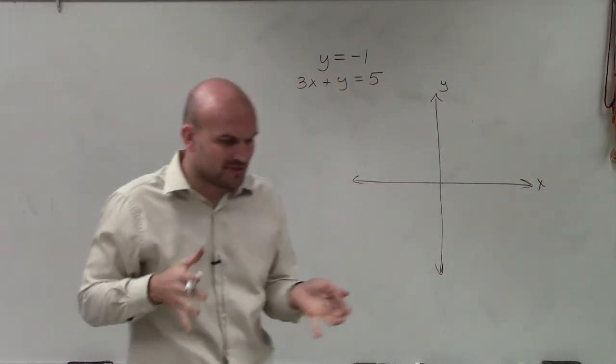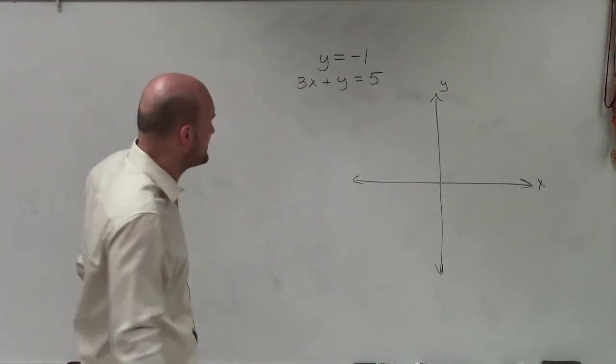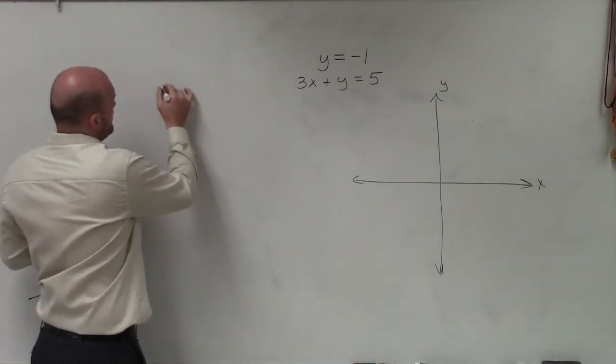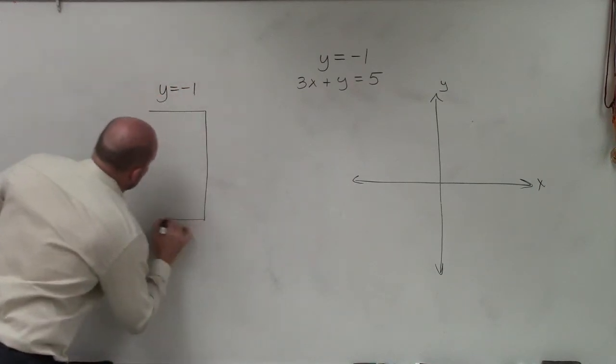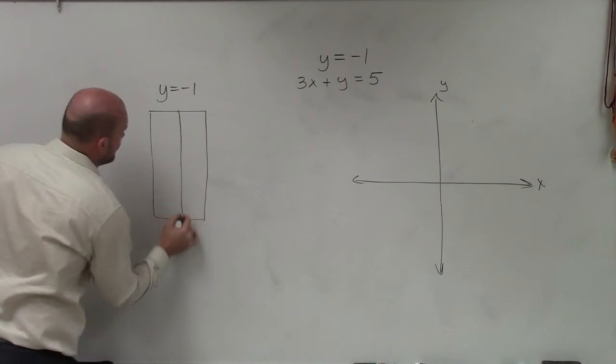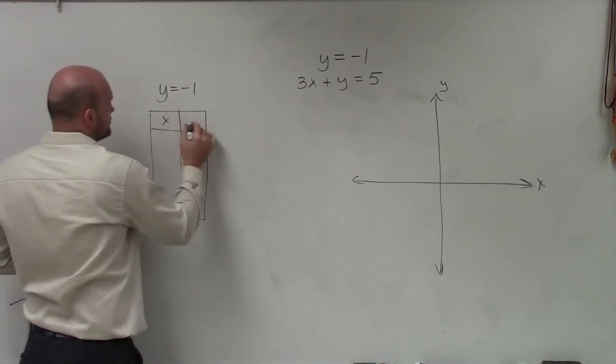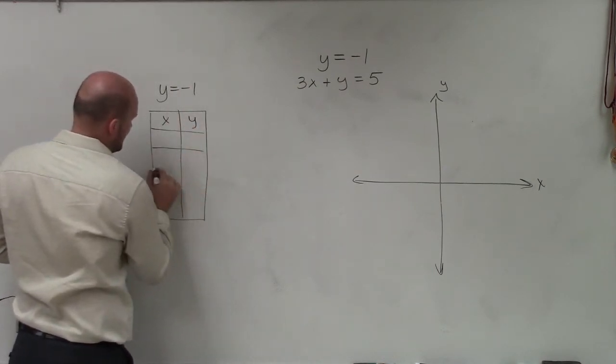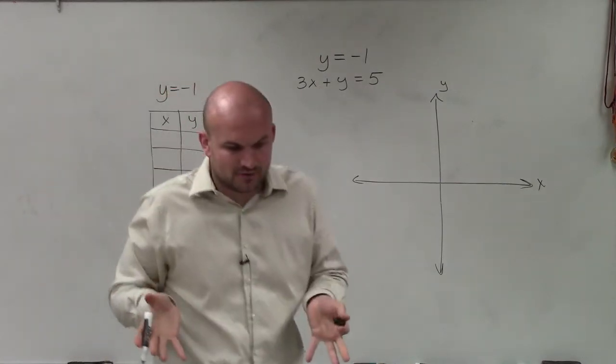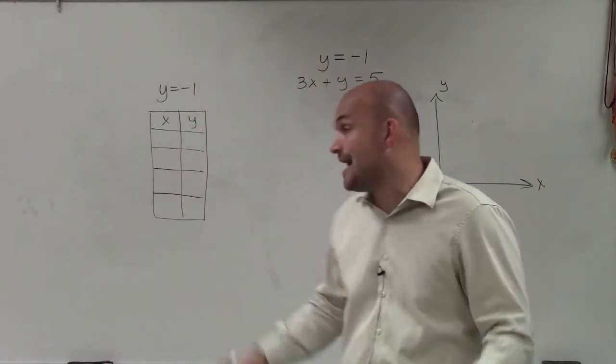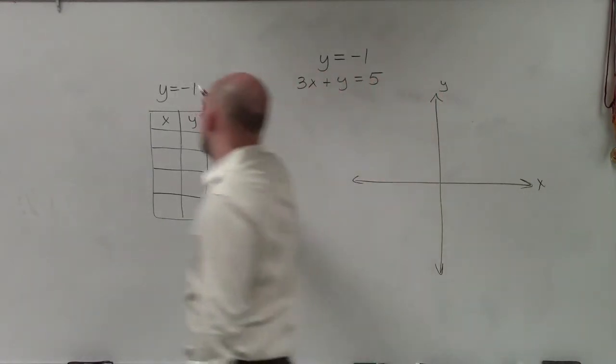There's a couple different ways we can go about this. For this one, I'm going to use kind of a table method to graph the y equals negative 1, because I see that a lot of students have trouble graphing when we only have one variable. So the important thing to understand when we're looking at how do we understand y equals negative 1 as a line, as a graph.